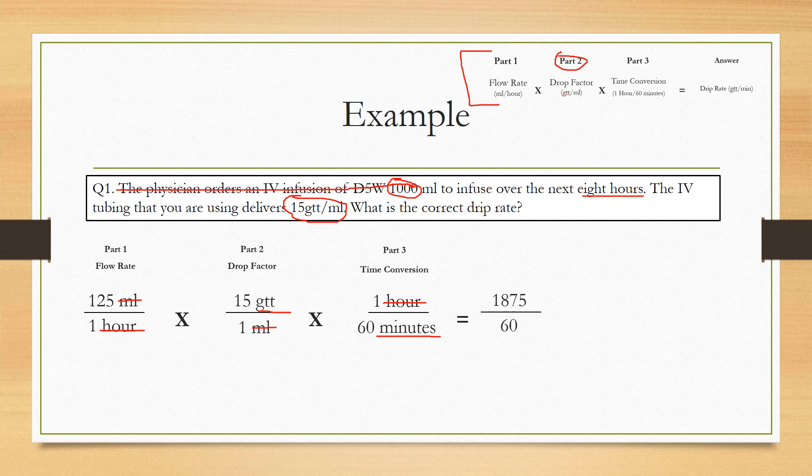So the answer is going to show you how many drips you need to see falling through that chamber in order to have the correct flow rate. So basically you're just going to multiply across.